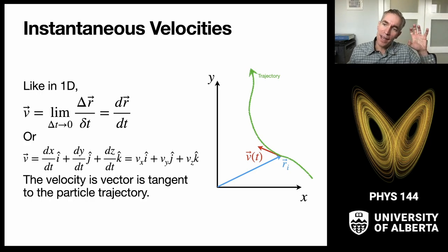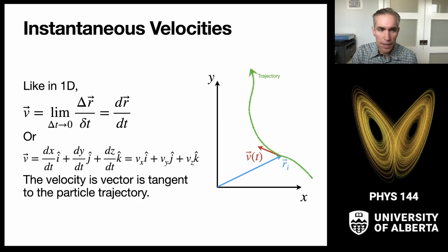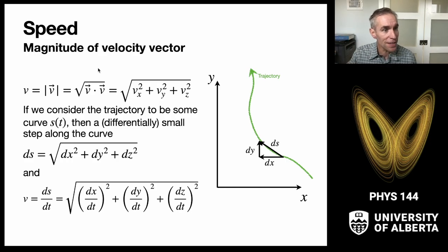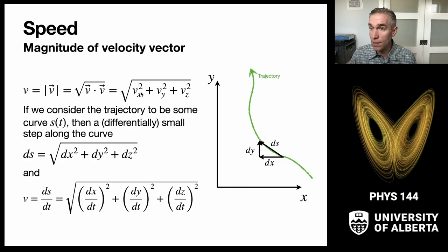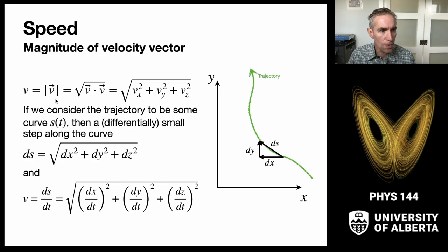Now we combine everything we learned about vectors with everything we learned about kinematics. Speed for a particle in three dimensions is just the magnitude of the velocity vector. We can express it as the square root of the velocity vector dotted with itself, which turns out to be the square root of vx squared plus vy squared plus vz squared — sort of like the Pythagorean theorem, but in three dimensions.